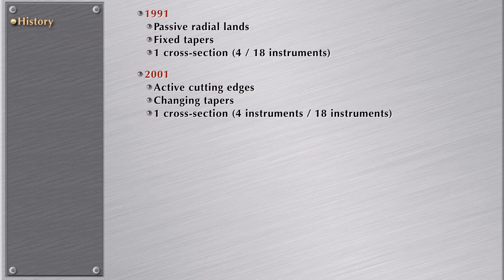The second generation is in 2001. Now we have active cutting edges, and a file that really engages in the canal wall and cuts, instead of the previous generation that scrapes the canal wall. We have changing tapers — different tapers in the active portion of the file, not a constant taper. We still have one cross section, meaning whenever we cut that file we will have the same design. Again, companies offered from four instruments to 18 instruments. That's the past.